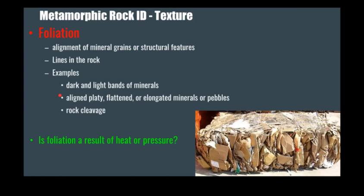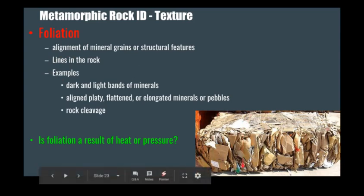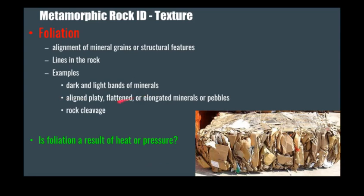Foliation — think foliage as in leaves on a tree. This is the alignment of mineral grains, just like the alignment of leaves. You get stacks and alignment of these platy layers, which could be layers like in a slate, but can also be more visible mineral layers. Examples include dark and light bands of minerals, aligned platy minerals like micas in a schist, or even elongated pebbles. If the rock cleaves in nice thin layers, that's a good indicator you're working with a rock that has foliation.